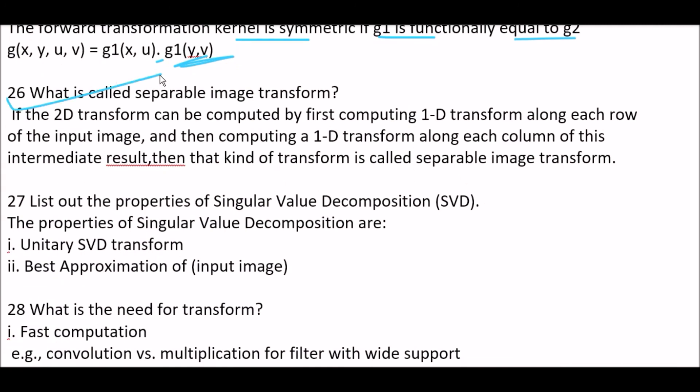Next question. What is called separable image transform? Answer is, if the two-dimensional transform can be computed by first computing 1D transform along each row of the input image and then computing a one-dimensional transform along each column of this intermediate result, then the kind of transformation is called separable image transformation.